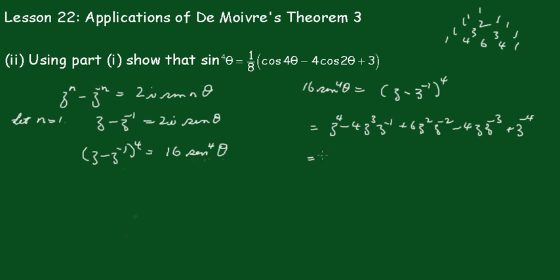Now regrouping this we get Z^4 plus Z^(-4) minus 4(Z^2 plus Z^(-2)) plus 6.